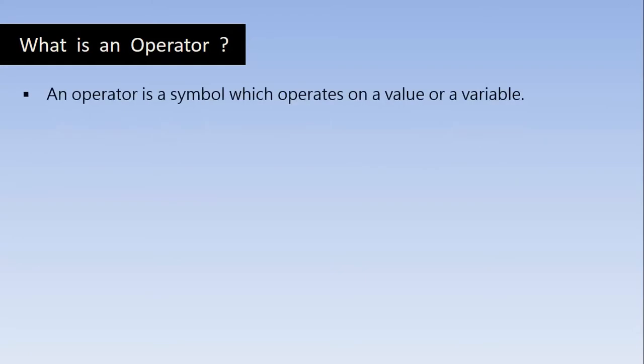First let's understand what an operator is. An operator is a symbol which operates on a value or a variable. For example, plus is an operator to perform addition. Likewise, we have plenty of operators in C language that operate on an operand or a pair of operands. Now let's look at the types of operators.